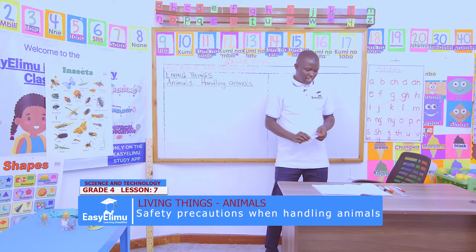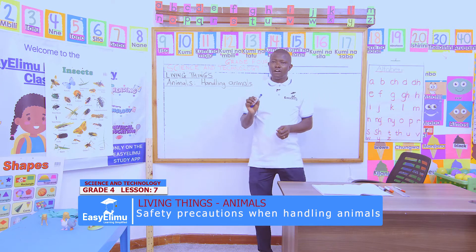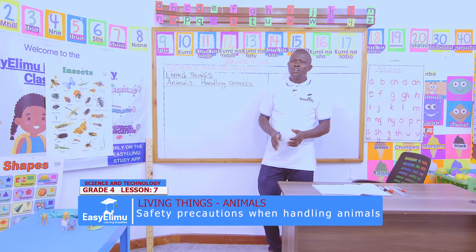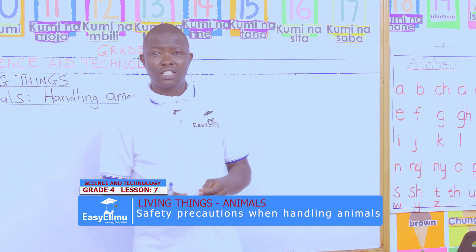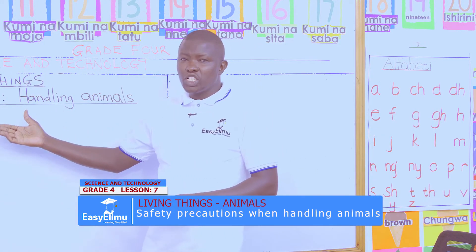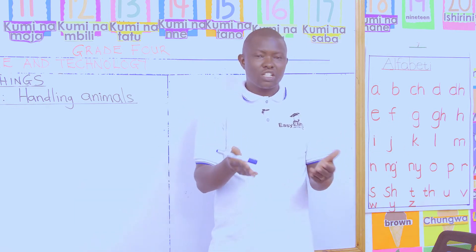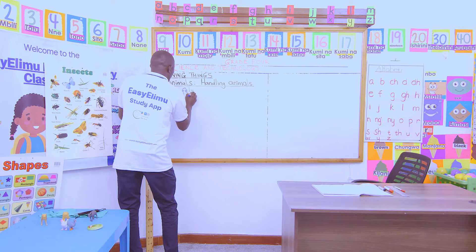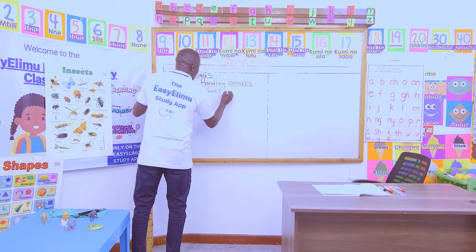Today in our groups, I want us to observe how we take care of ourselves when we handle animals. What are the safety measures or precautions we take when handling these animals? Because we know some are big, some are small like a cat, and others are very poisonous like a scorpion. We start with the safety measures when handling animals.